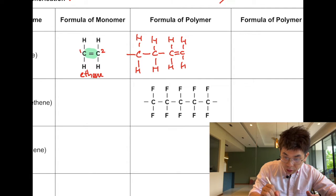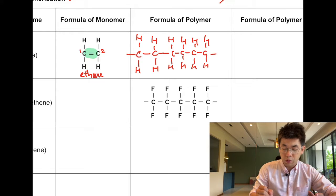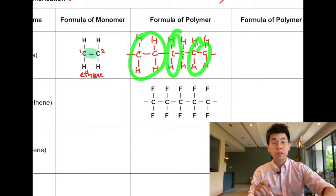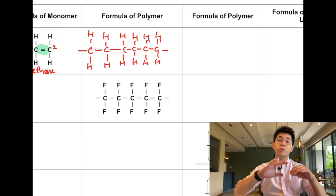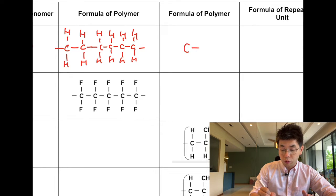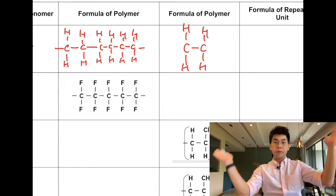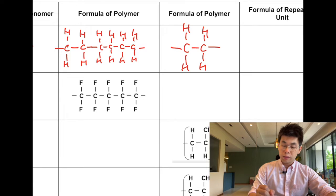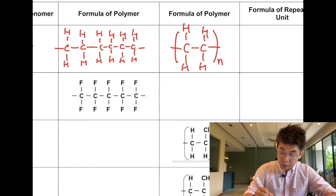Over here we have three repeating units of the polymer, and polymers go on and on. So what we do is instead of drawing so many, we will just write the monomer with the double bond opened up so it goes on both sides, draw a bracket, and to indicate that there are many units we put an n.